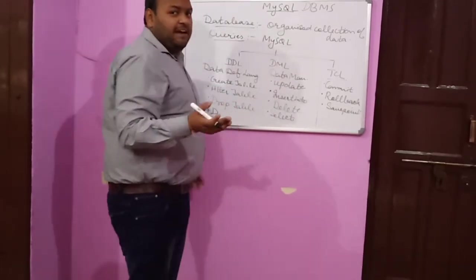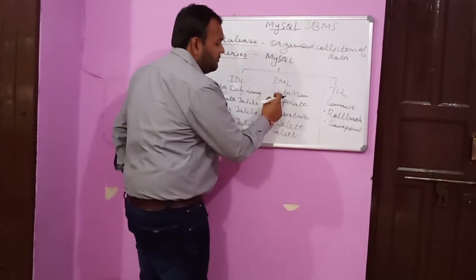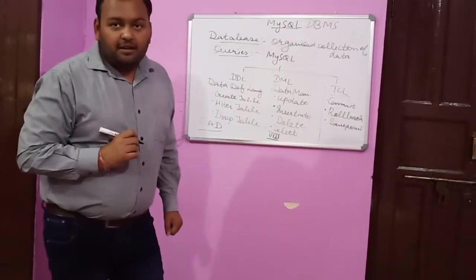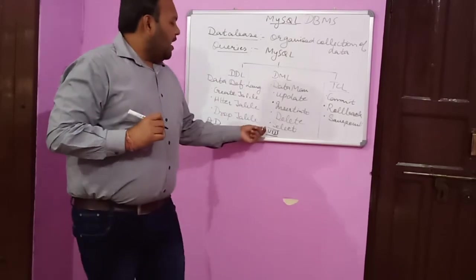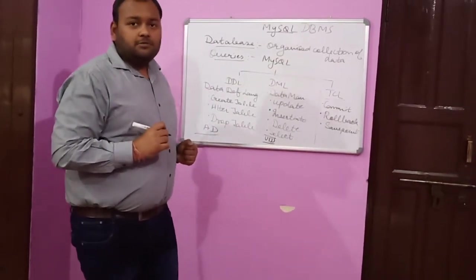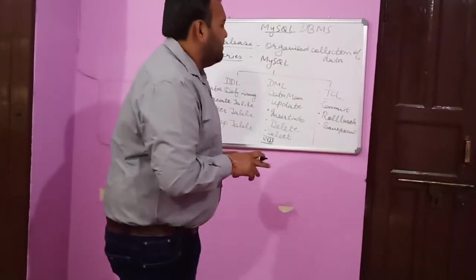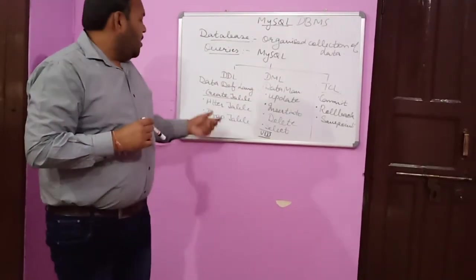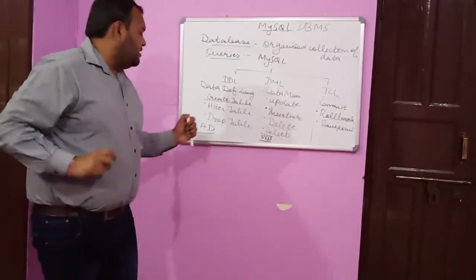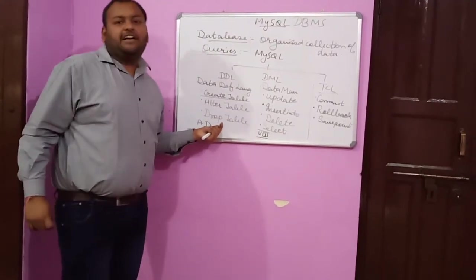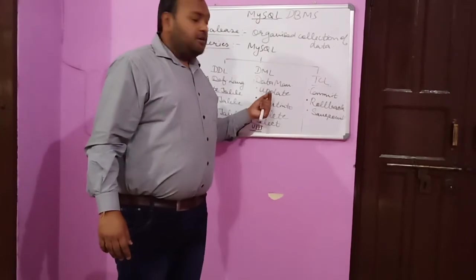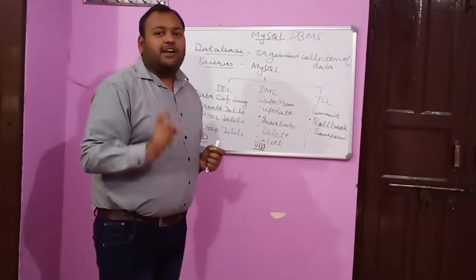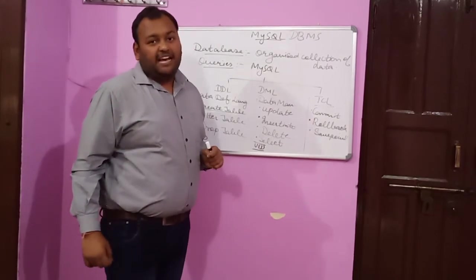Note that INSERT INTO comes before UPDATE, since you first insert data into a table and then update it. Now for definitions: CREATE TABLE is for creating a table. ALTER TABLE is for changing the structure of the table. DROP is used to remove the structure of the table from a database. UPDATE command is used for updating the records in the table. INSERT INTO is used to insert records. DELETE is used to delete a particular record or row from a relation. SELECT is used to display the data.